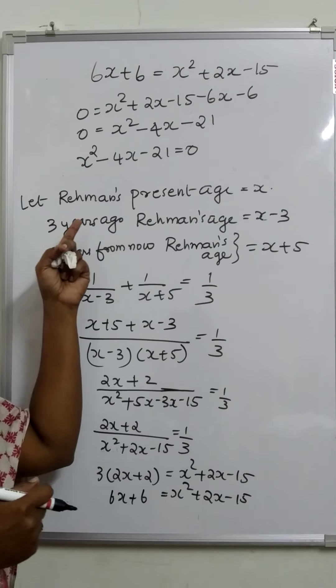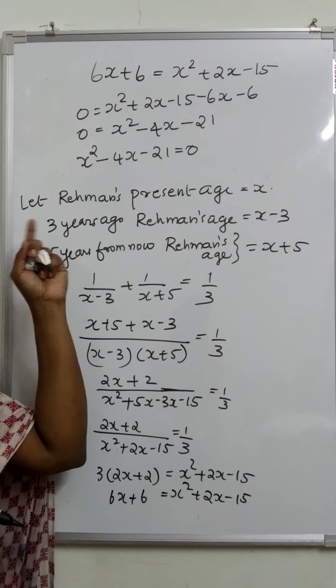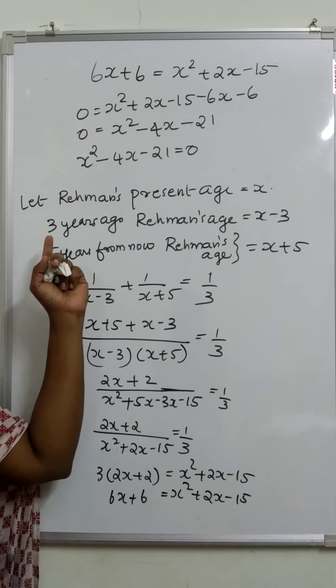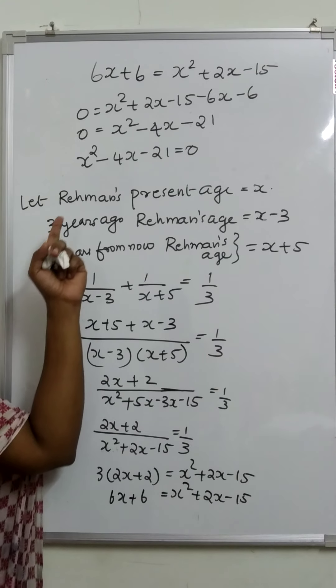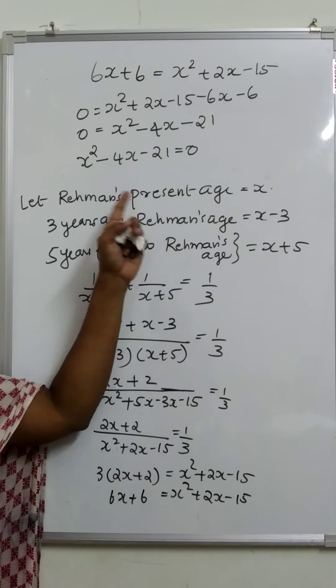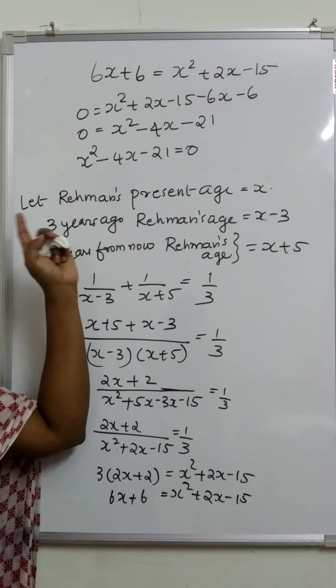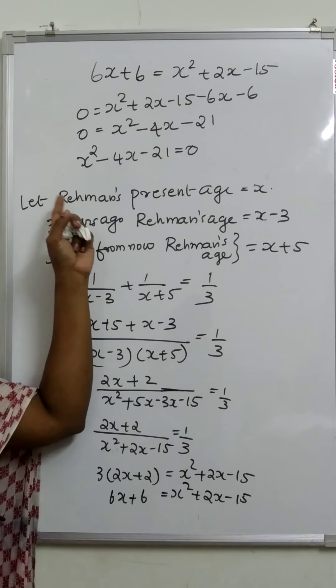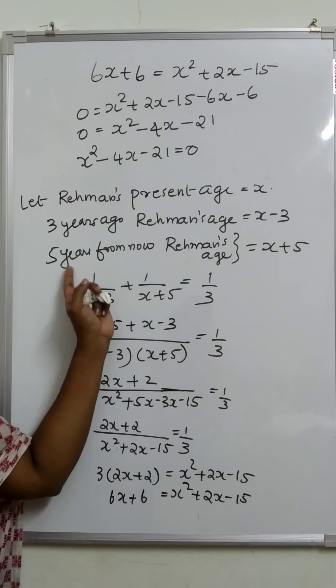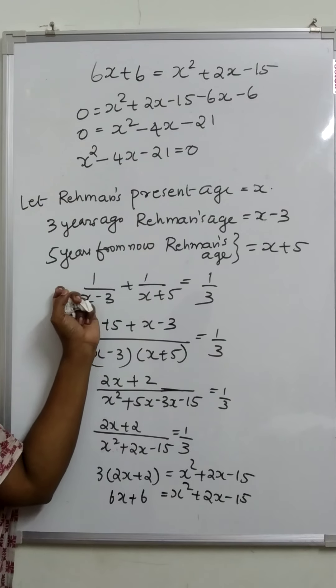You have to solve this equation by quadratic formula or by factorization and find the value of x. Since x represents an age, any negative value of x is not possible. Therefore we must take only the positive value.